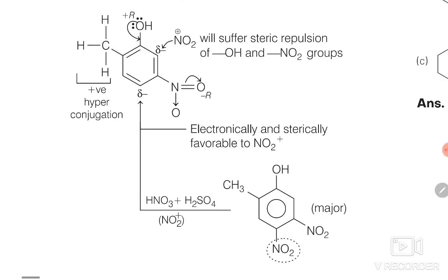HNO₃ and H₂SO₄ combine to form electrophile NO₂⁺, which goes to the para-position of the OH group. Among the substituents, NO₂ is electron-withdrawing (ignored for directing), while OH donates by resonance and CH₃ donates by hyperconjugation. Since resonance is more powerful than hyperconjugation, the final answer is determined in accordance with the OH group — NO₂⁺ attaches at para to OH.